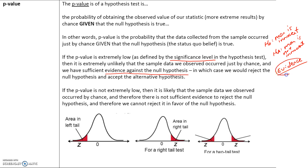Returning to the trial analogy: if the evidence collected did not happen by chance and is substantial, that means the man is not innocent — the null hypothesis is actually false. If the p-value is high, then it is likely that the sample data occurred by chance and therefore there is not sufficient evidence to reject the null hypothesis.